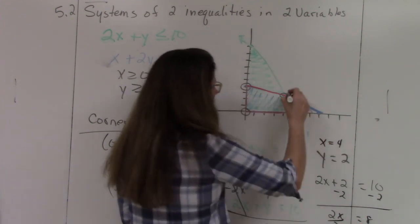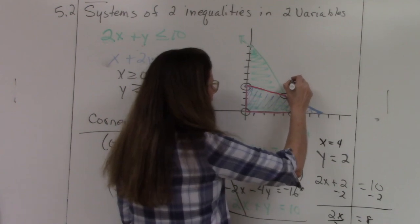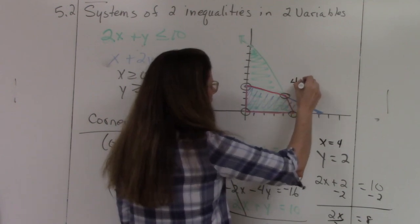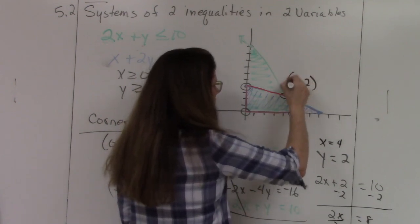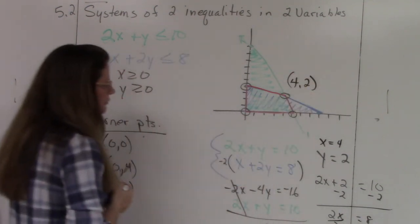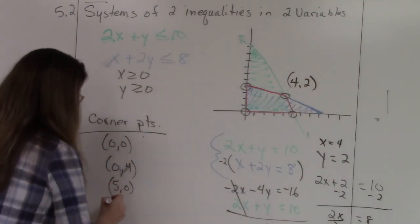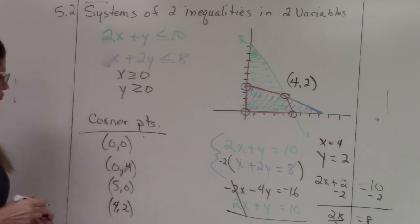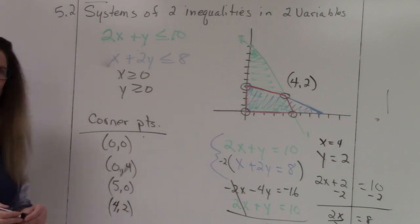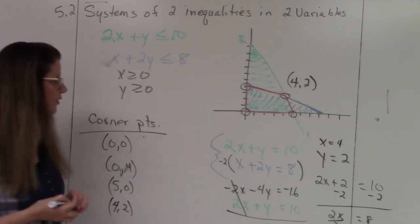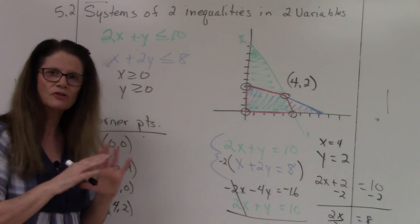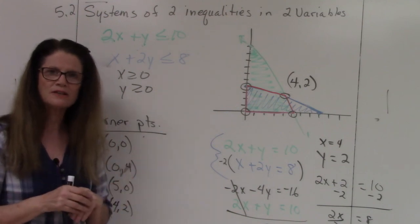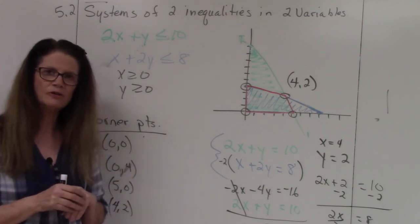So that fourth corner point is (4, 2). And as far as section 5.2 goes, that's as far as you have to go.